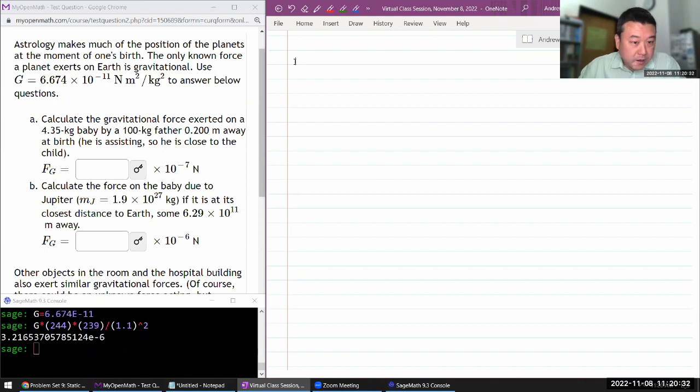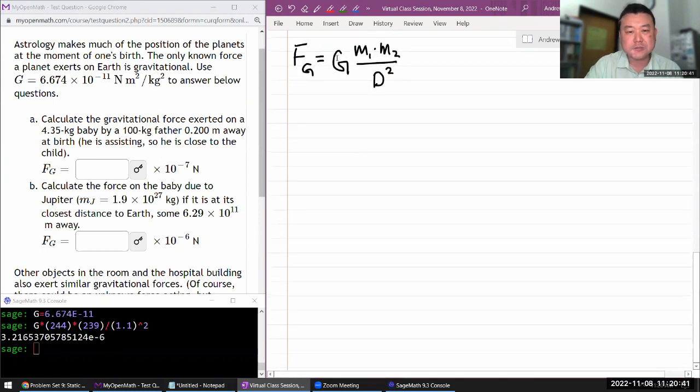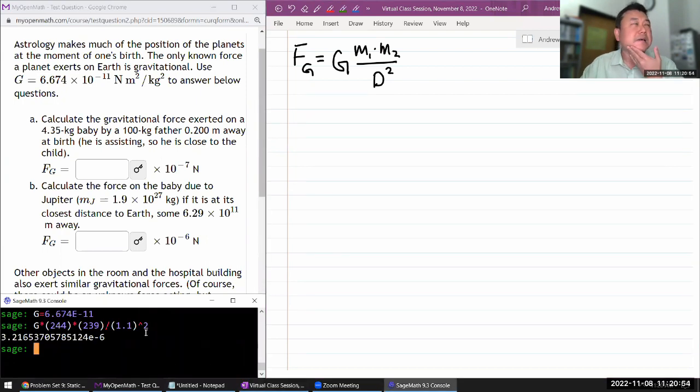So we got the gravitational force exerted on some mass baby. I shouldn't have scrolled down. I'm still going to use the expression for Newton's law of universal gravitation. I got two masses and the distance. I don't think he would be 20 centimeters away from the baby, at least not from his center of mass, but never mind. It's just an estimate.